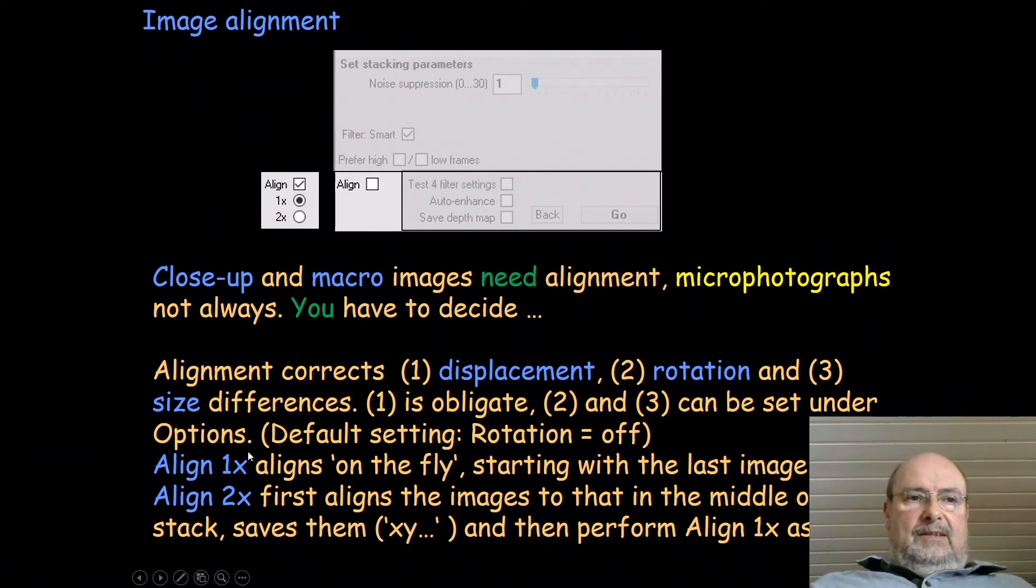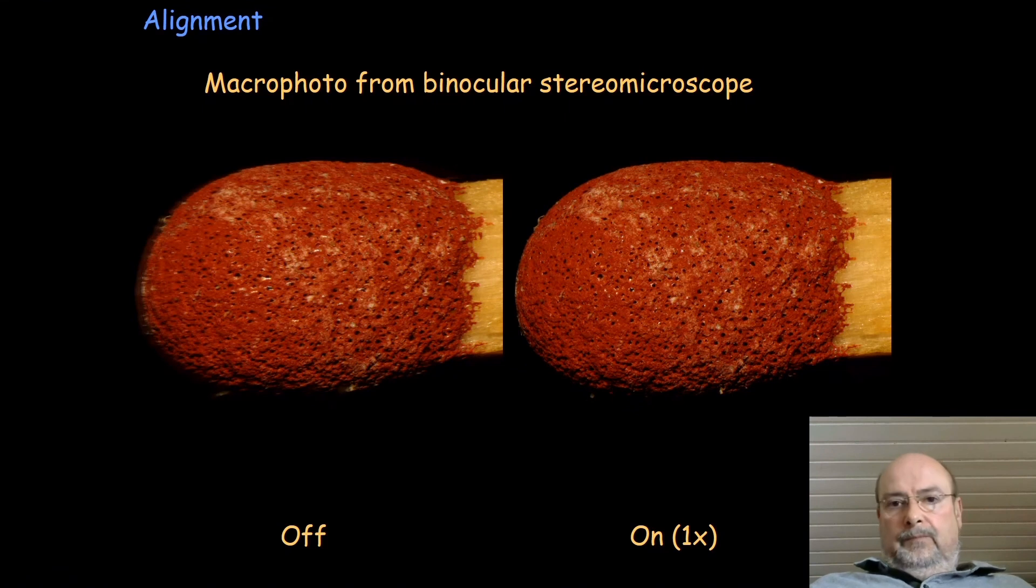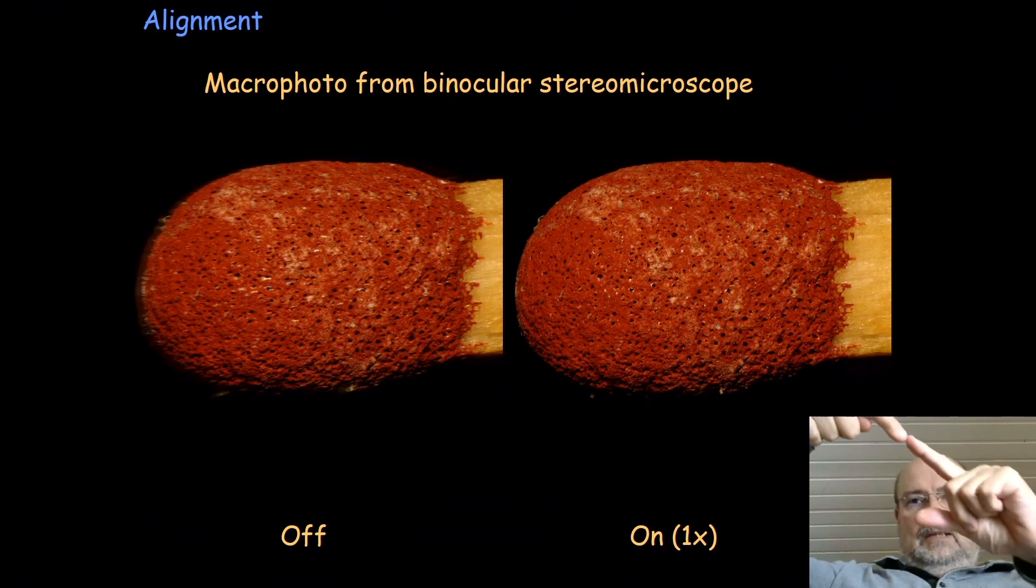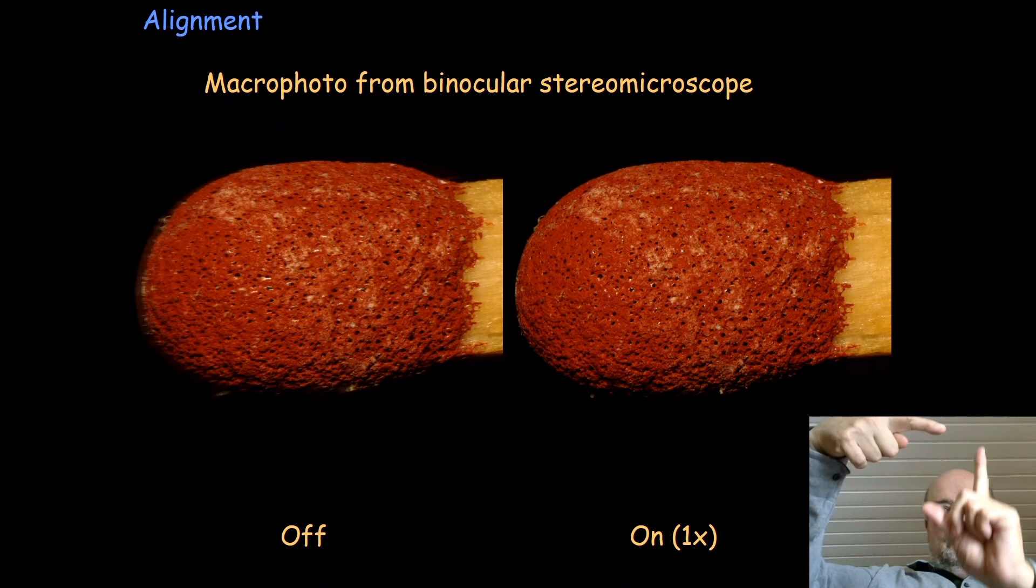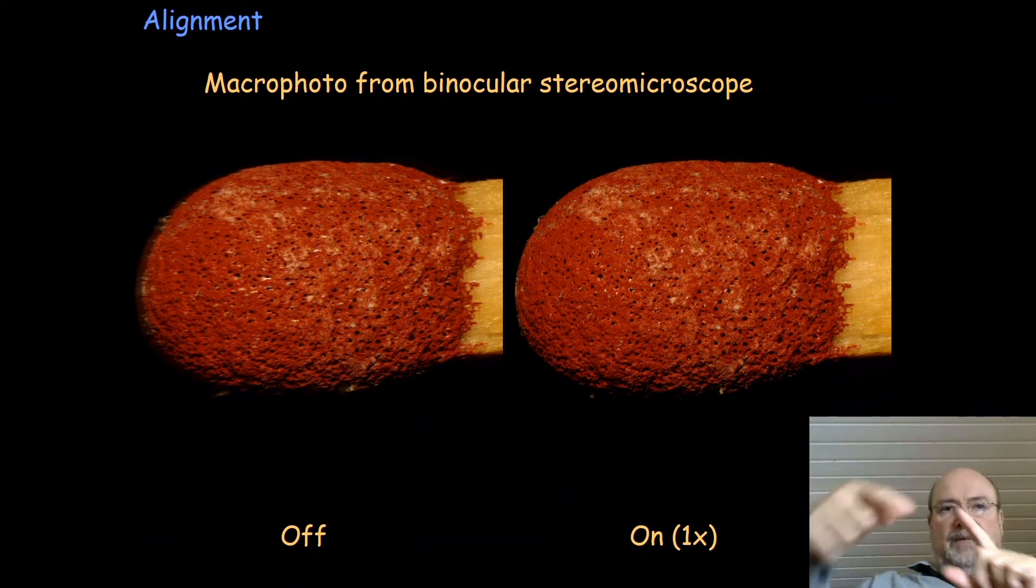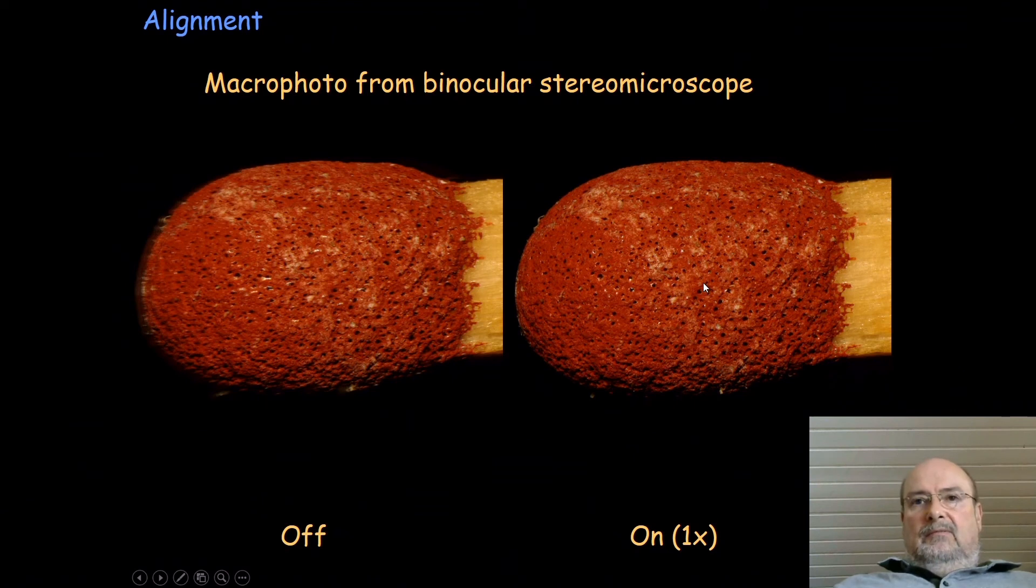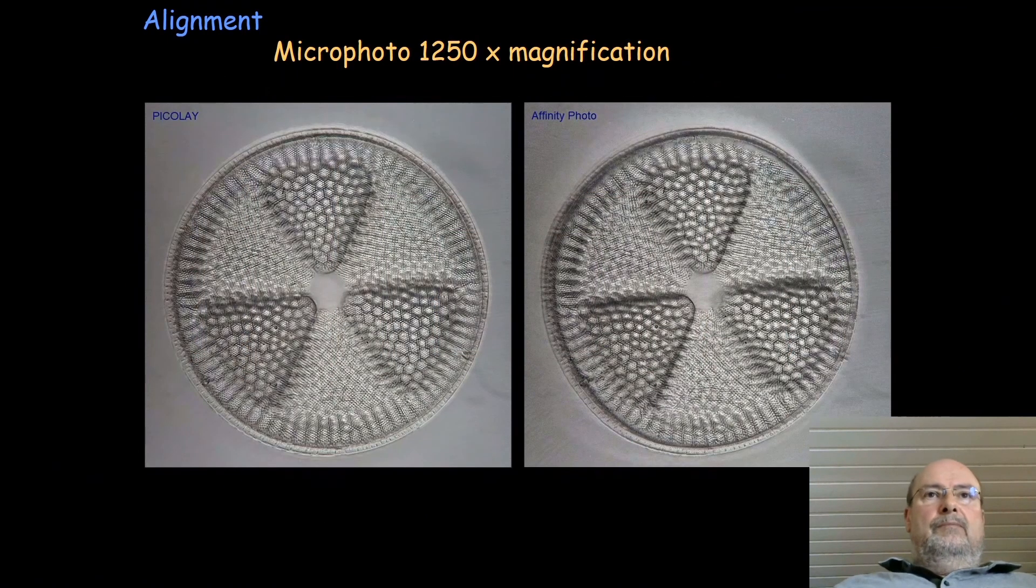Here we have examples. This is a macro photo from a binocular stereo microscope. If you have that, you really need the alignment. If you don't do it, it's not a nice result. You can see these white dots are becoming lines. When you're looking with a stereo microscope and you're changing the focus, it will not be in line with your optical axis. Therefore you have to do some corrections to see the same point of the object in the same point of the picture. This is mandatory in that case, no question.